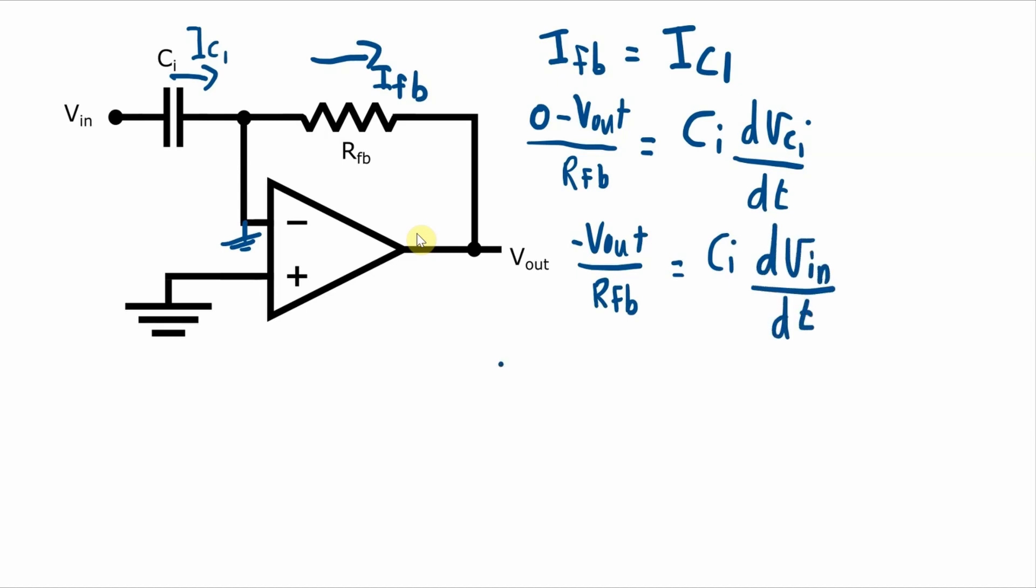Do a little bit of rearranging and we get Vout is equal to negative Rfb times Ci times the rate of change of the input. And that right there is our equation relating the output to the input.